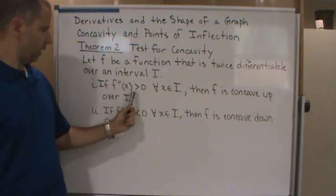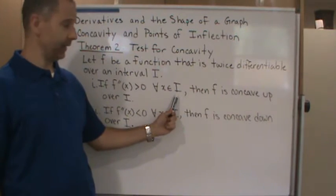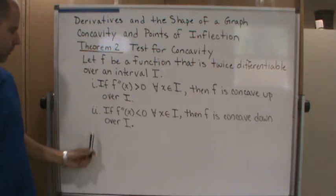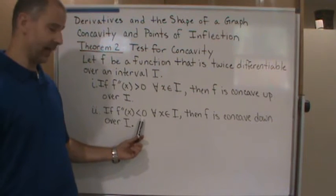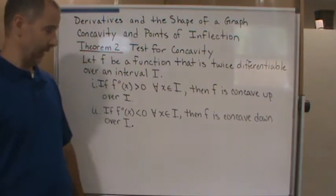If the second derivative f''(x) is greater than zero for all x in the interval I, then f is concave up. Two: if the second derivative f''(x) is negative, less than zero for all x in the interval I, then f is concave down over I.